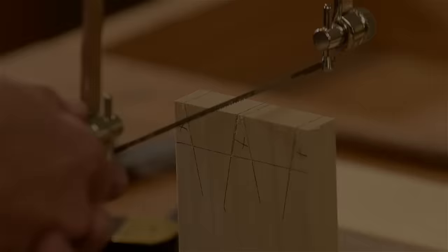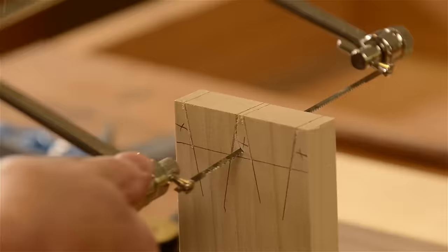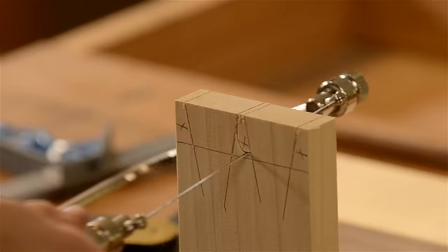Now I grab a coping saw to cut out the waste wood. As I'm sawing, I slowly turn the saw inward toward the waste. I saw down close to the baseline but I'm careful to not hit the baseline.